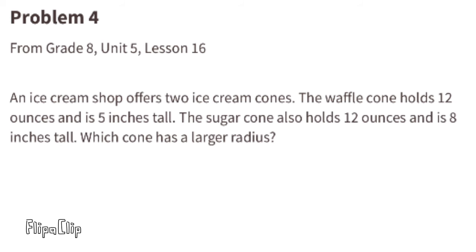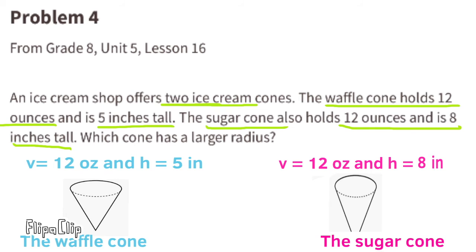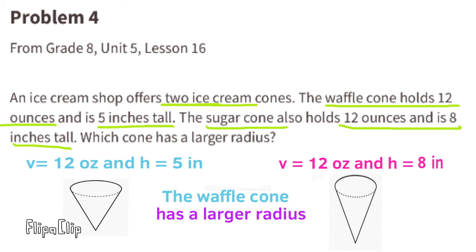Problem number 4, from 8th grade Unit 5 Lesson 16. An ice cream shop offers two ice cream cones. The waffle cone holds 12 ounces and is 5 inches tall. The sugar cone also holds 12 ounces and is 8 inches tall. Which cone has a larger radius? Since both cones hold the same volume, the shorter cone will have the larger radius. So the waffle cone has a larger radius.